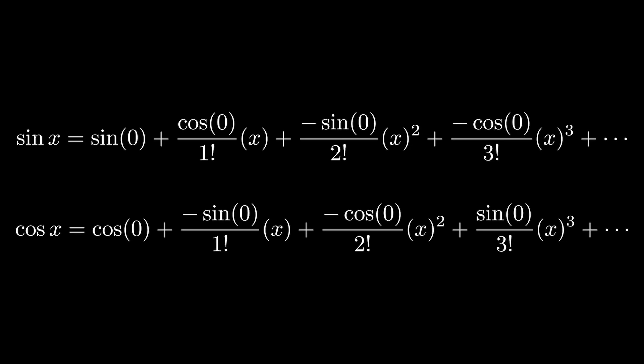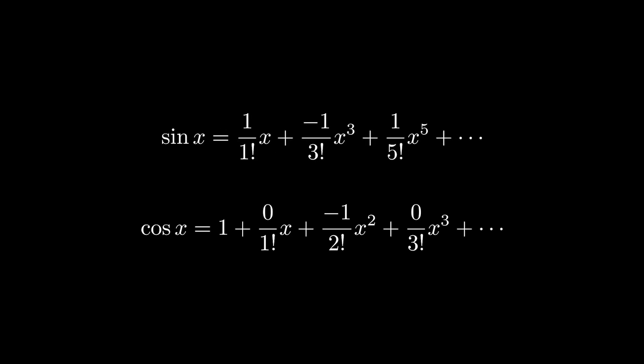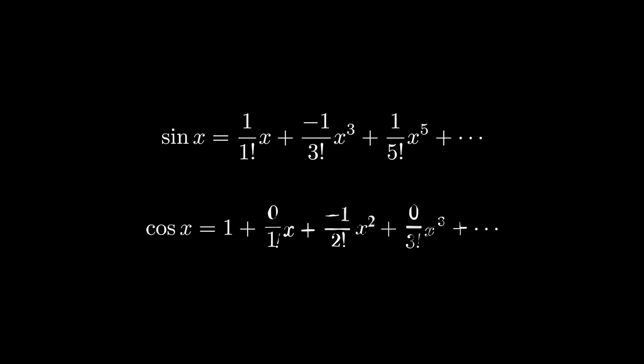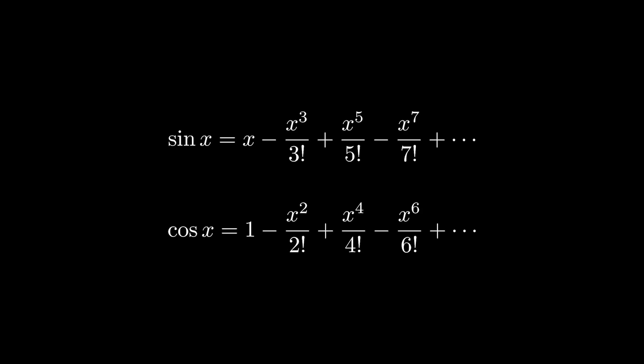For the Maclaurin series, the values of these higher-order derivatives cycle through: sine of zero is 0, cosine of zero is 1, negative sine of zero is 0, and negative cosine of zero is negative 1. Since every other derivative is zero, every other term in the Maclaurin series is also zero. Specifically, every even-degree term is gone for the series of sine x, and every odd-degree term is gone for cosine x. The signs alternate for every other second derivative, so terms alternate between negative and positive. Since nonzero derivative values are either 1 or negative 1, we get a very simple Maclaurin series for sine x and cosine x.